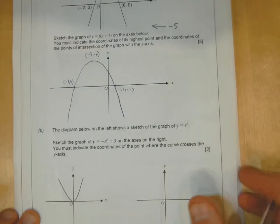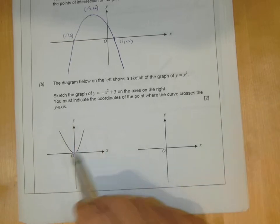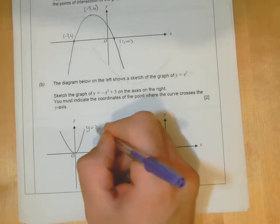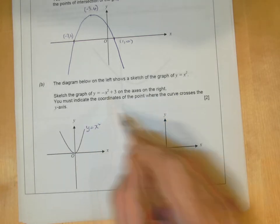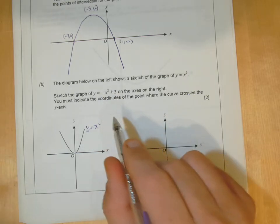Okay, part B. You've got here minus x squared plus 3. Now here, this is the graph of x squared. It says there, the diagram on the left shows y equals x squared. Then you're asking us to do minus x squared plus 3. This actually is a double transformation. There's two transformations that's taking place.